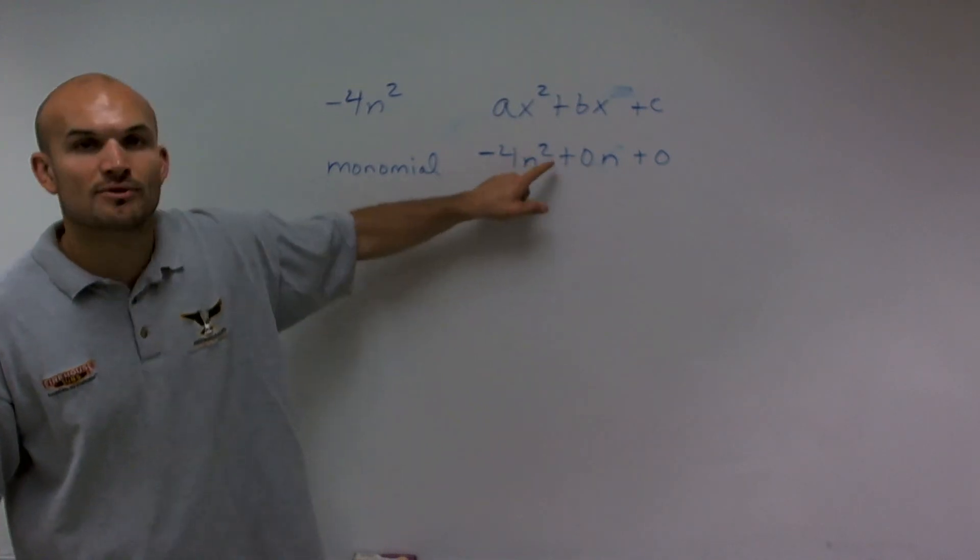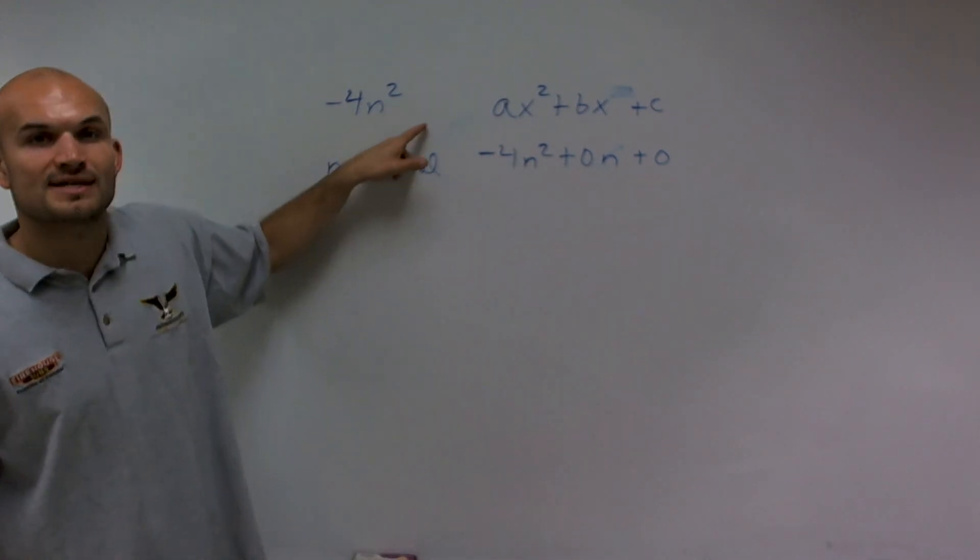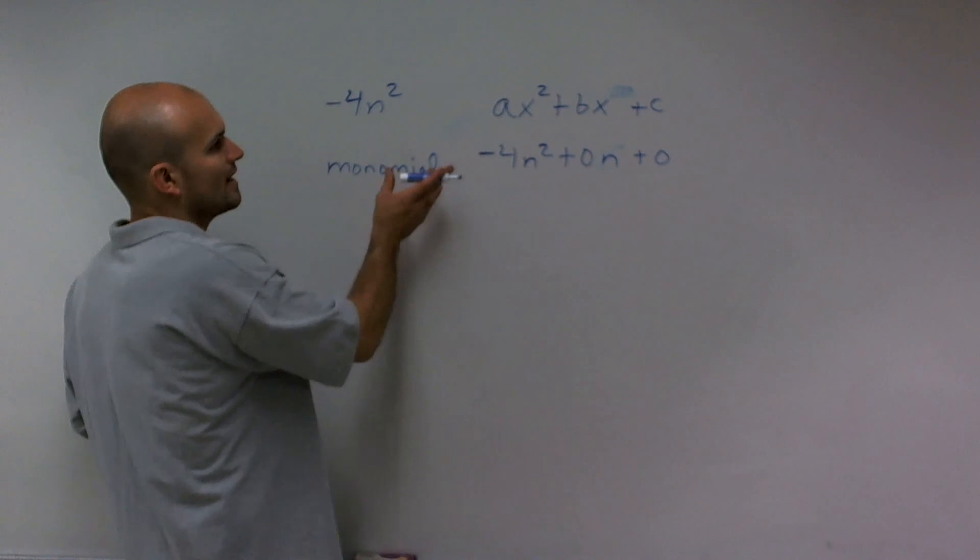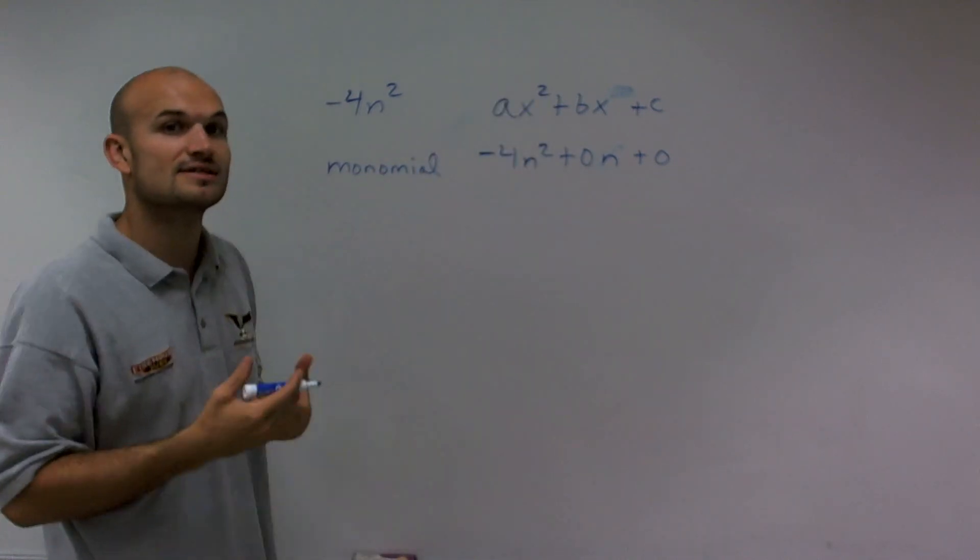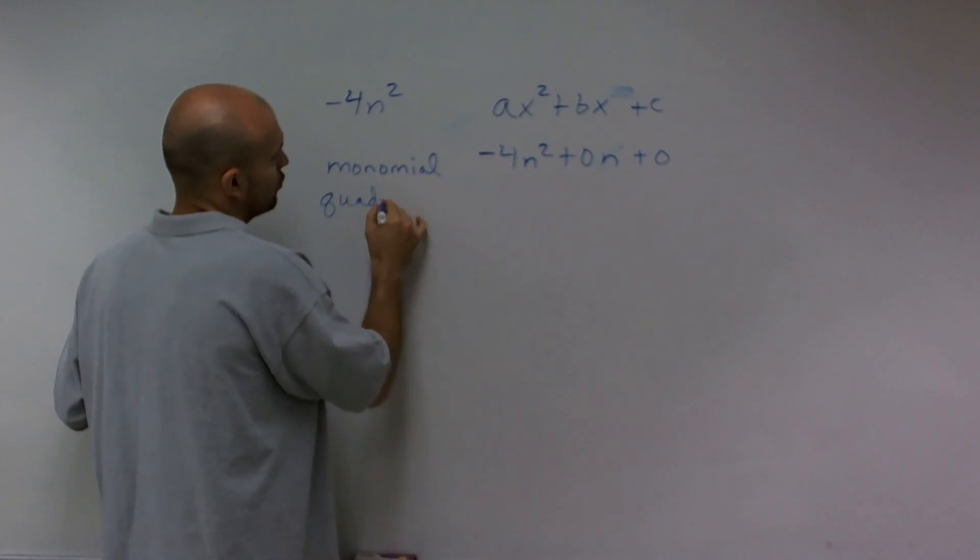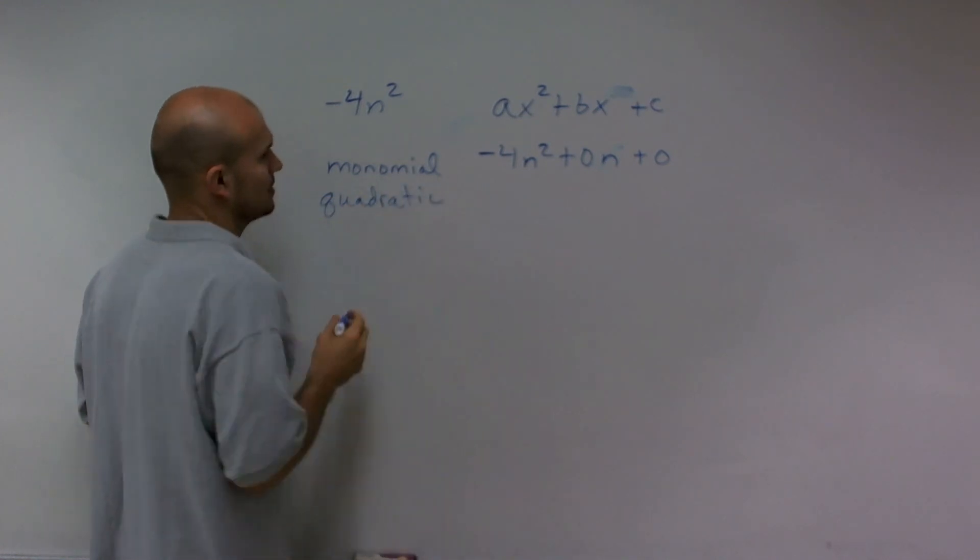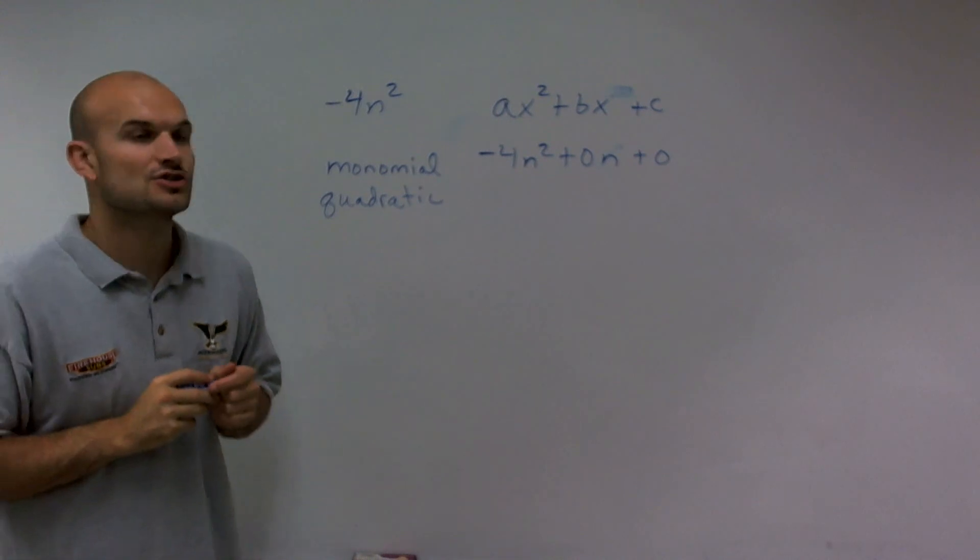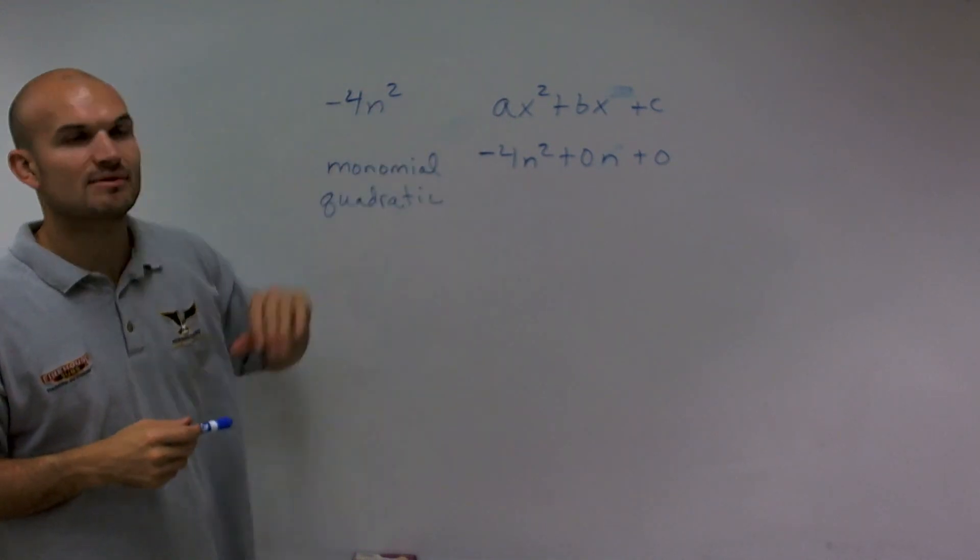Therefore, this would be its quadratic form of this monomial. So whenever you have a degree to your second power, you can write it in the quadratic form. We could say this is going to be a quadratic monomial, since it's degree 2 and can be put in the quadratic form.